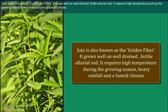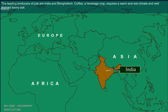Jute is also known as the golden fiber. It grows well on well-drained fertile alluvial soil. It requires high temperature during the growing season, heavy rainfall, and a humid climate. The leading producers of jute are India and Bangladesh.